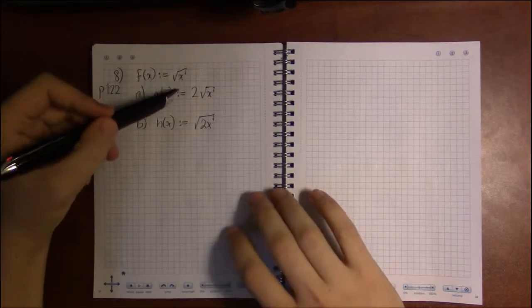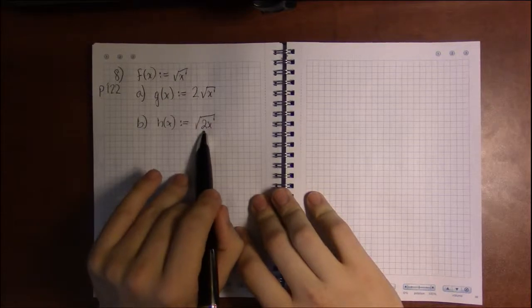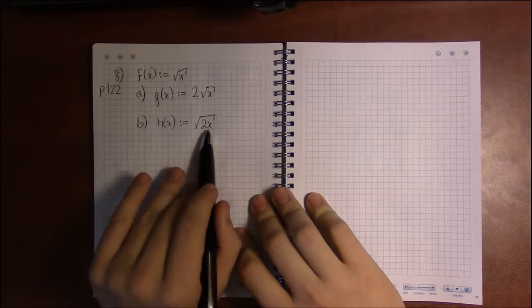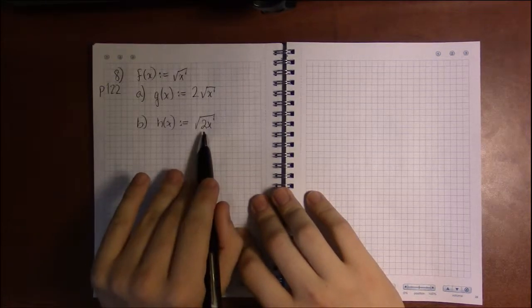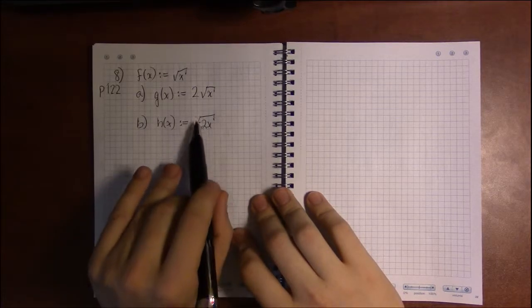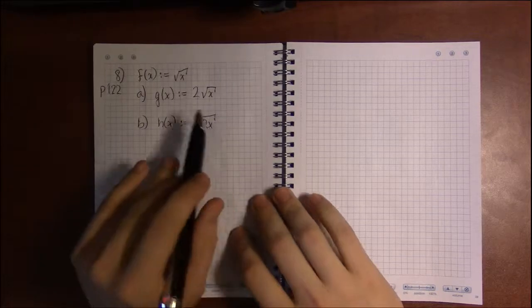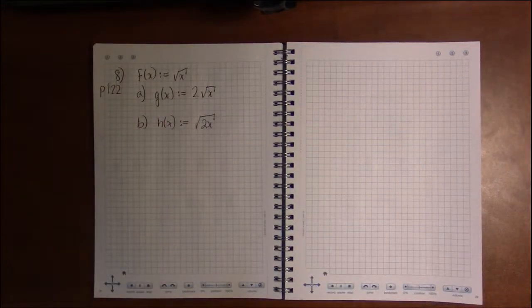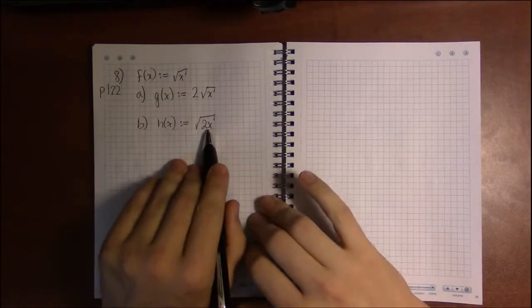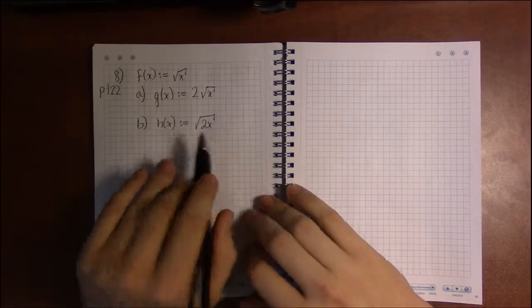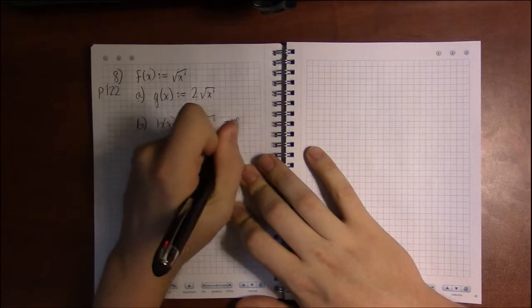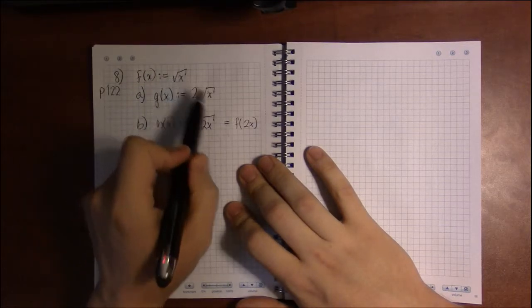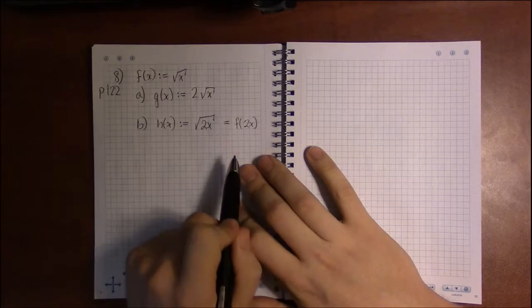Now in this case, here in h, the 2 is as close as it can get to x. So this is a horizontal scaling, because we're multiplying or dividing, resulting in stretching or contracting, stretching or shrinking. So since it's as close to the x as possible, this is a horizontal transformation. And in fact, you can see that if instead of x, you replace x with 2x, you get h of x.